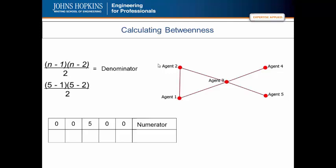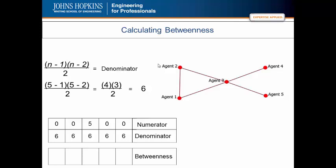So, for this network, that ends up being 6. So, the numerator in all of these betweenness centrality measures is now 6. Thus, the betweenness score is as follows.